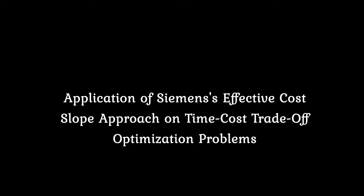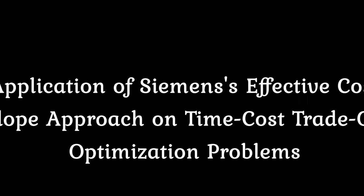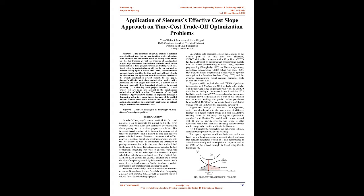Application of Siemens' effective cost-slope approach on time-cost trade-off optimization problems. Abstract: time-cost trade-off (TCT) analysis is accepted as a significant aspect of any construction project planning. Both the client and contractor would be willing to contribute for the fast tracking as well as crashing of construction project. Optimization of time and cost results in simultaneous minimization of total project duration and total project cost.